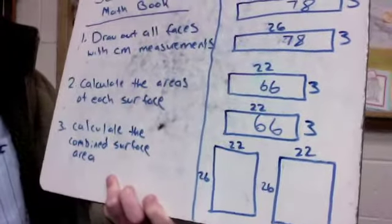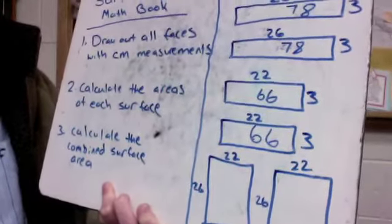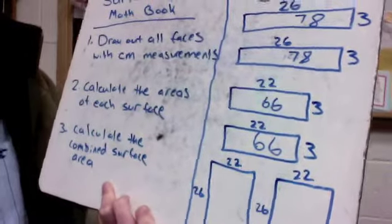And then the biggest surfaces I have are the front and the back, which is going to be 26 by 22, which is going to be 572.